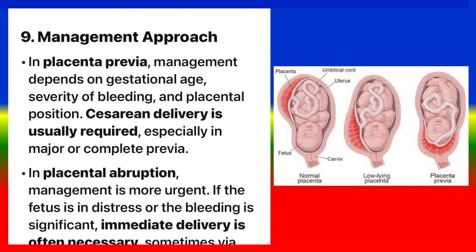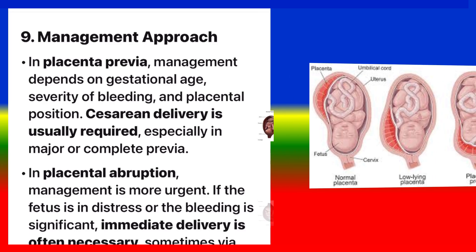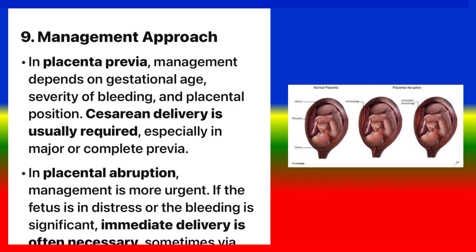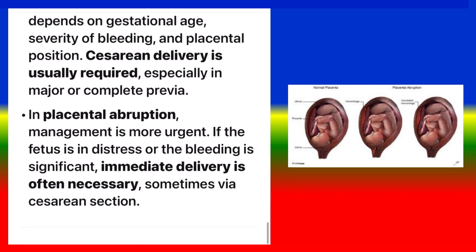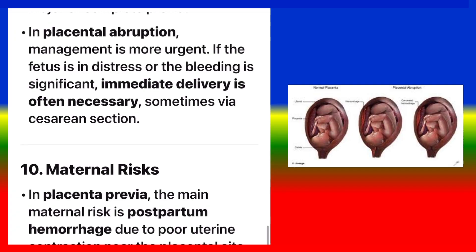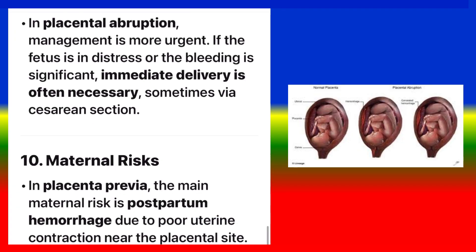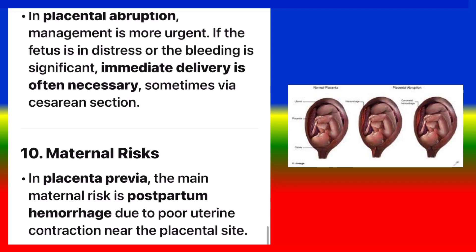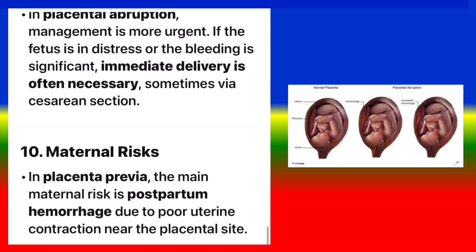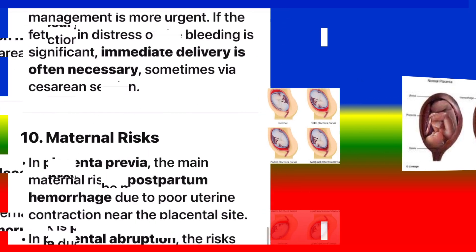Management approach. In placenta previa, management depends on gestational age, severity of bleeding, and placental position. Cesarean delivery is usually required, especially in major or complete previa. In placental abruption, management is more urgent; if the fetus is in distress or the bleeding is significant, immediate delivery is often necessary, sometimes via cesarean section.